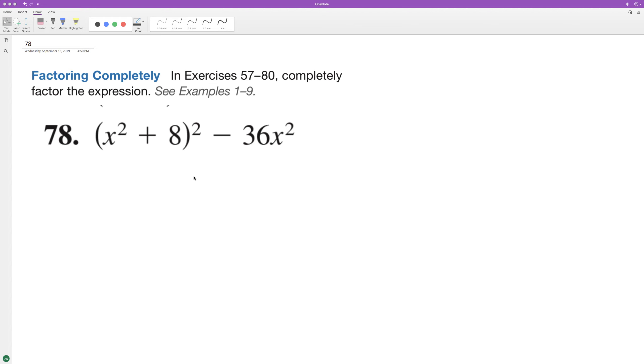We'll go ahead and substitute u for x squared plus 8, so we have u squared minus 36x squared. So we can break this down into u minus 6x and then u plus 6x.